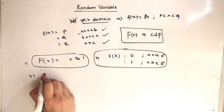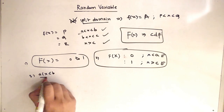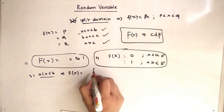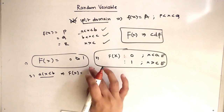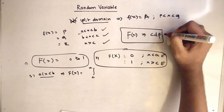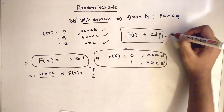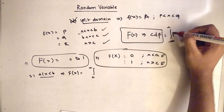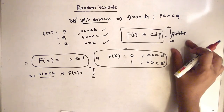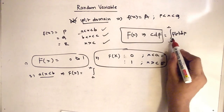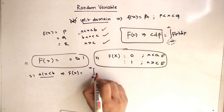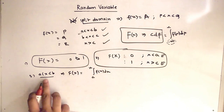For the mid-range from a to b, capital F(x) equals the integral from a to x of small f(x) dx. It cannot be from a to b — the upper limit must be x. This comes from the formula: F(x) = integral from minus infinity to x of f(x) dx. Since the lowest possible range starts at a, we integrate from a to x.